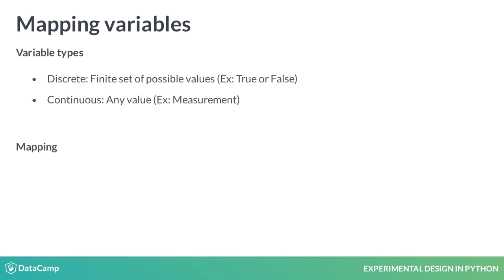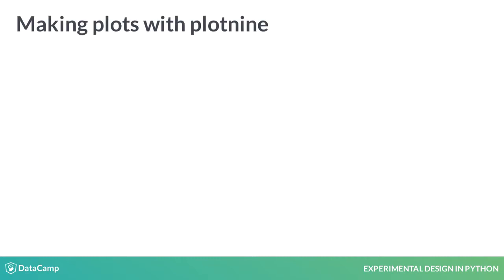When plotting, we map these variables to different aspects of the plot. We can assign a variable to the x or y axis, or we can change the colour using the fill or colour arguments, depending on the variable. In this course, we will be using the plot9 package to create plots. Plot9 uses a grammar of graphics approach, which makes it really easy and intuitive to use.